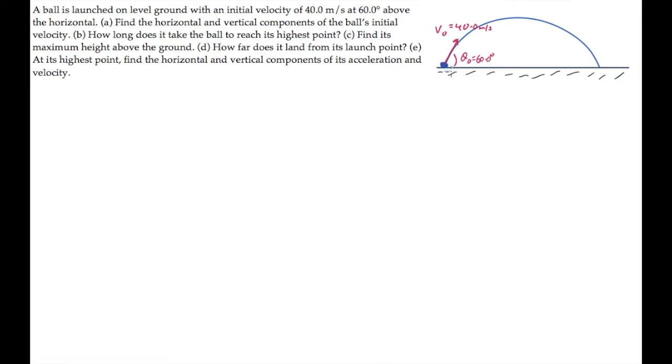Part A asks us to find the horizontal and vertical components of the ball's initial velocity. Those are the components shown here, V0x and V0y, which we can calculate as V0x equals the launch speed times cosine of the launch angle. Substitute values to find that it equals 20 meters per second.